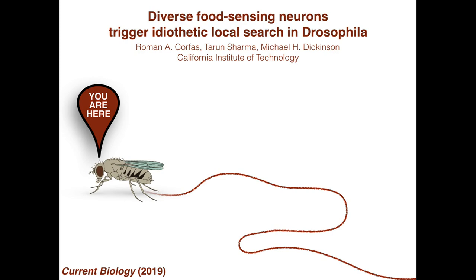By optogenetically activating distinct classes of neurons in the fruit fly, we found that multiple sensory pathways can trigger a local search that is thought to rely on a navigational strategy known as path integration.